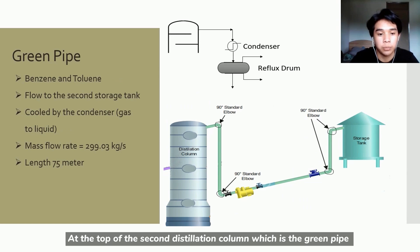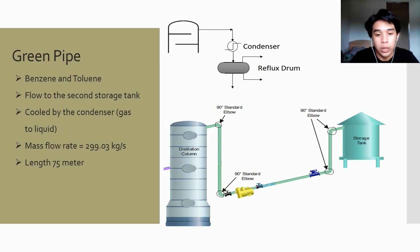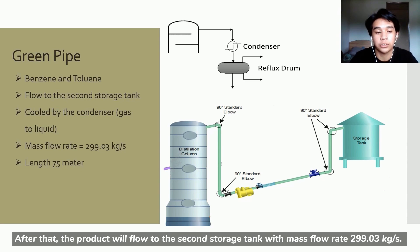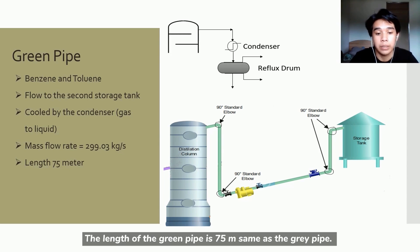At the top of the second distillation column, which is the green pipe which contains the benzene and toluene product. When the product moves up the column and exits the top of the unit, it is cooled by a condenser. Then, the product will be stored in the reflux drum. After that, the product will flow to the second storage tank with mass flow rate 299.03 kg per second. The length of the green pipe is 75 meters, same as the gray pipe.